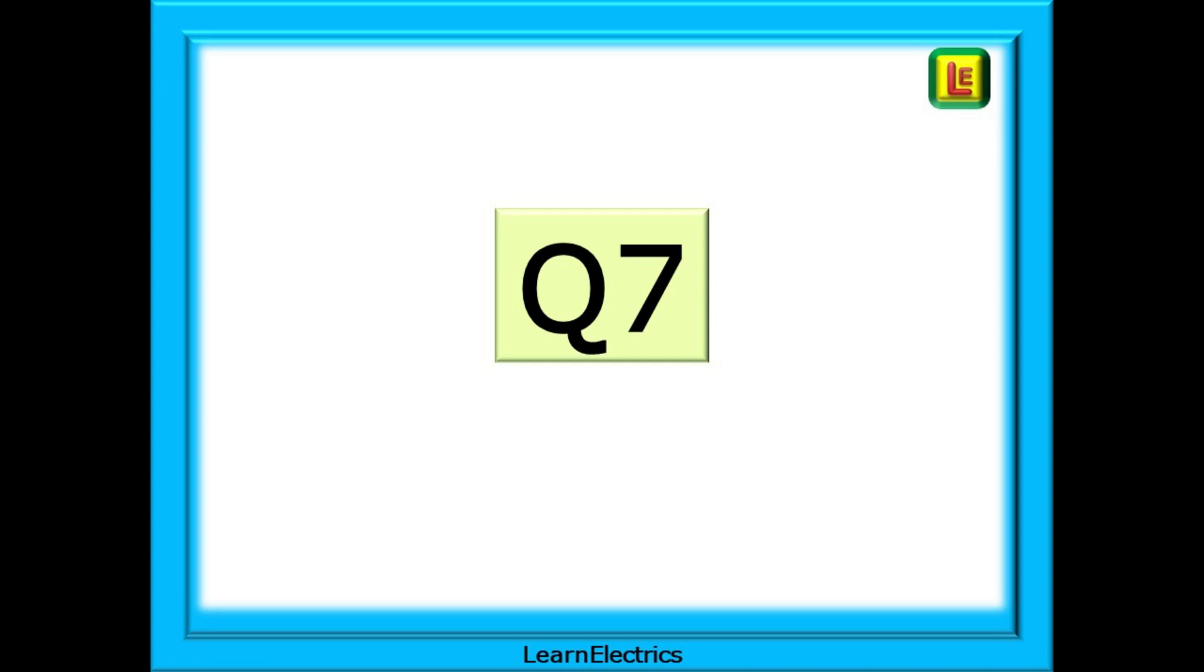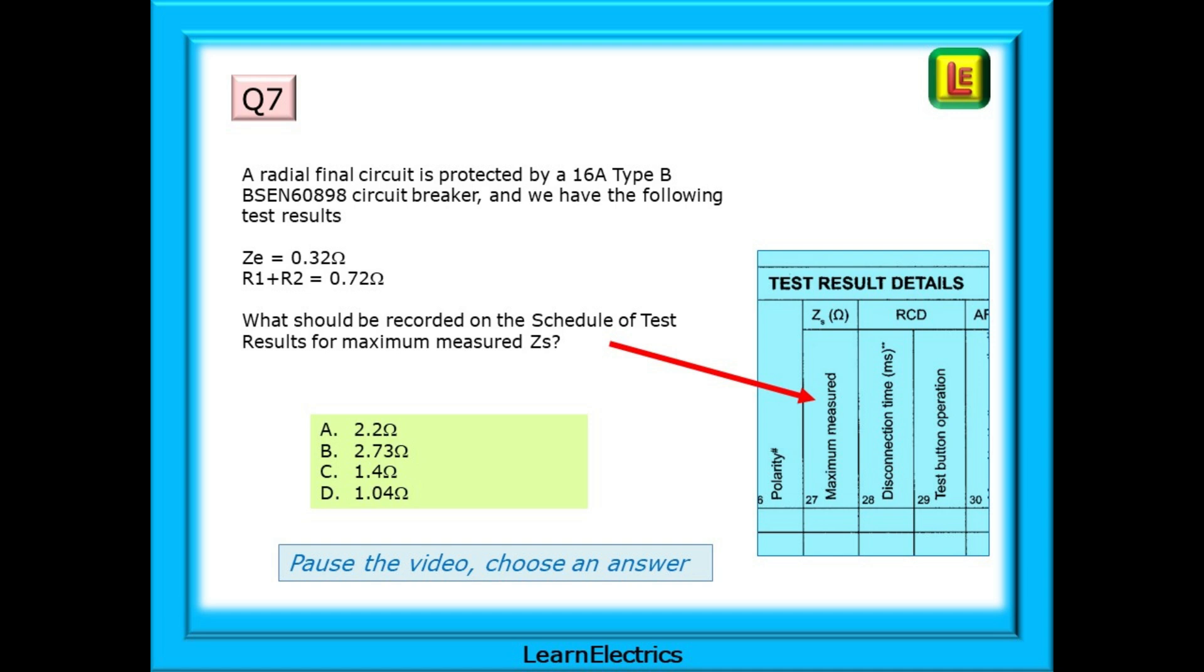On to question number seven. This question is about ZS. A radial final circuit is protected by a 16-amp type B BS-EN-60898 circuit breaker and we have the following test results as shown. What should be recorded on the schedule of test results for the maximum measured ZS? Pause the video. Choose an answer.